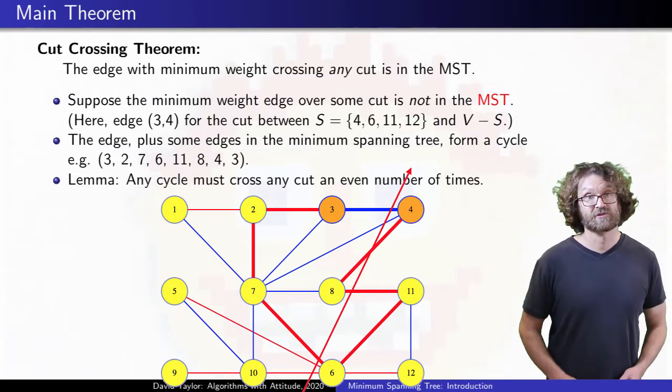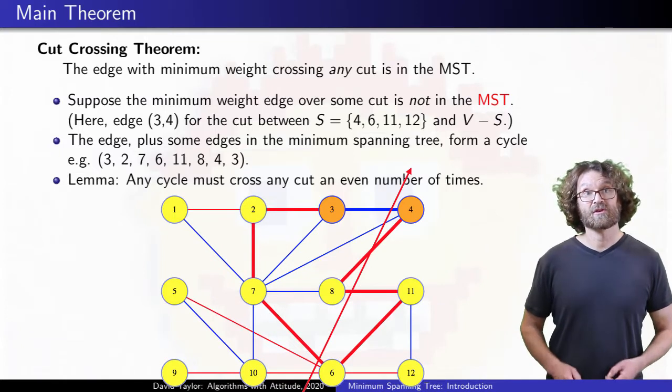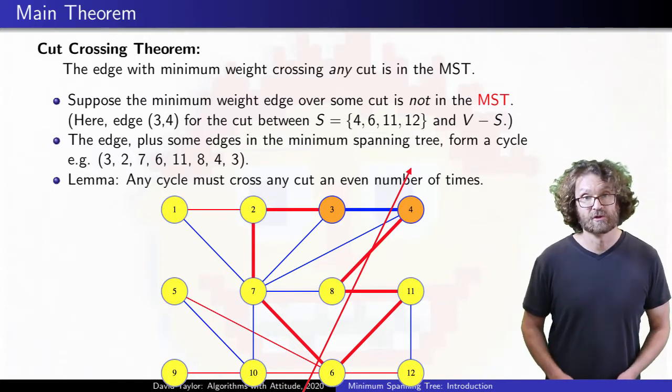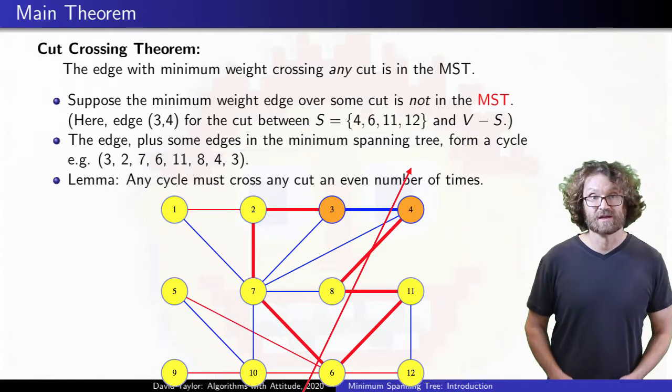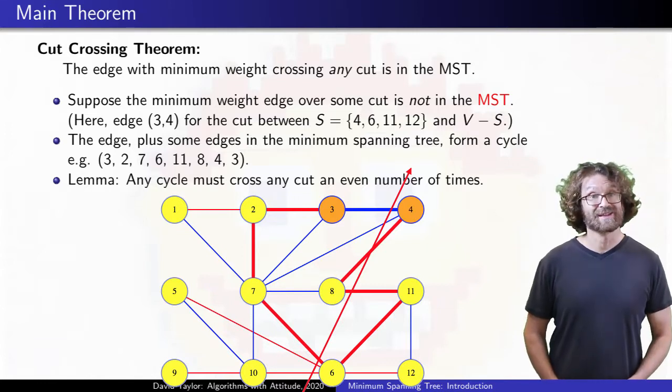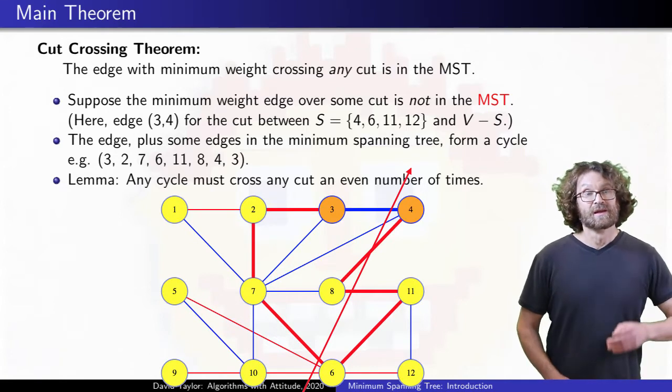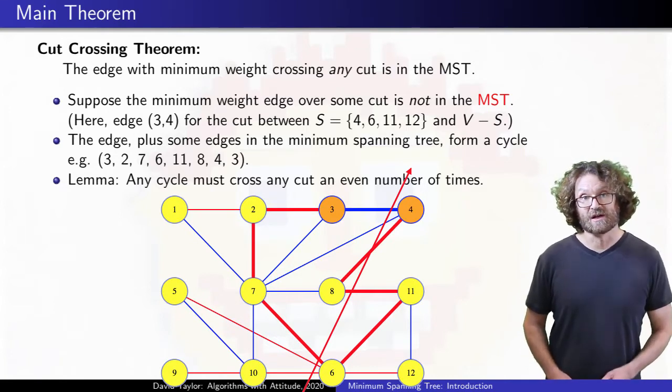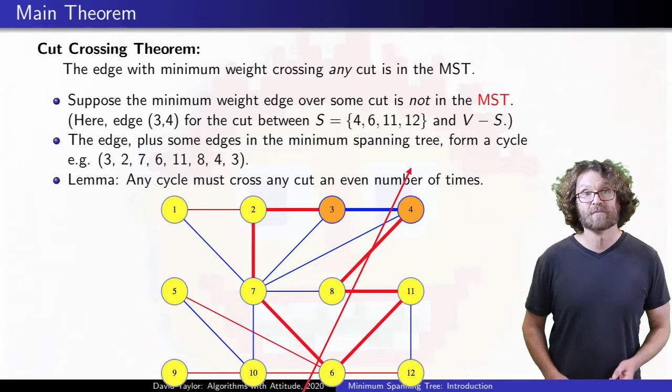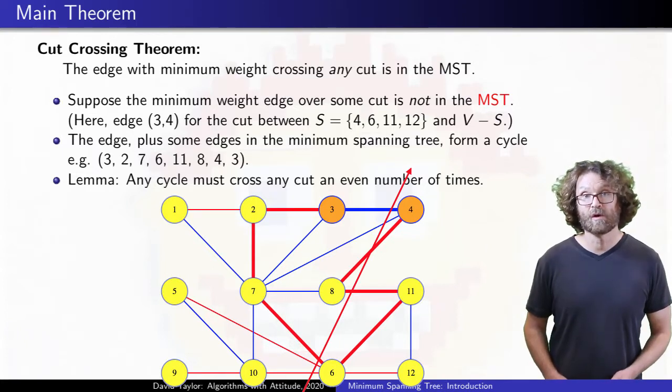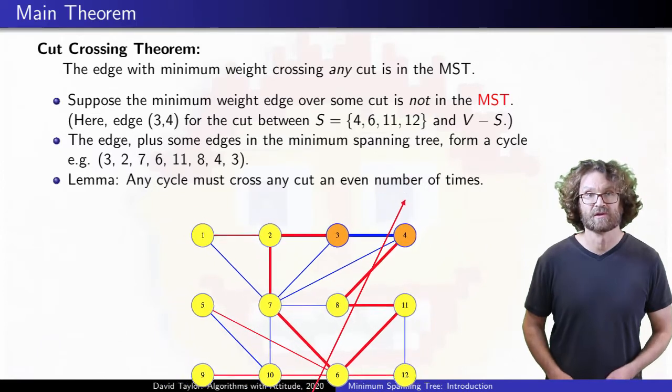3-4 crosses the cut once, so the other edges of that cycle, all from the tree, have to cross the cut an odd number of times, at least one. They can't cross it a negative number of times. If the cycle crosses the cut between 8 and 4, that edge must weigh more than the 3-4 edge, which was the minimum crossing the cut.